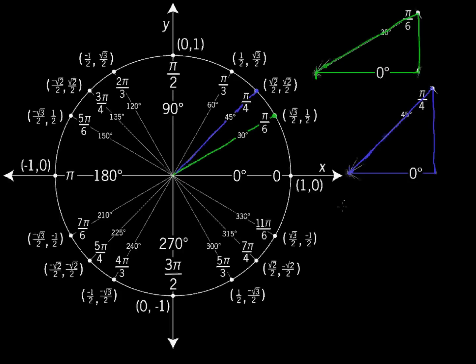We refer to the unit circle a lot in trigonometry because it quickly identifies the values of sine and cosine for many of the common angles that we use, such as pi over 6 radians, pi over 4 radians, and pi over 3 radians. Notice that this unit circle also has the angles written in degrees, such as 30 degrees, 45 degrees, and 60 degrees.